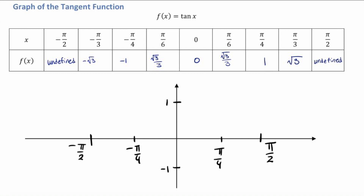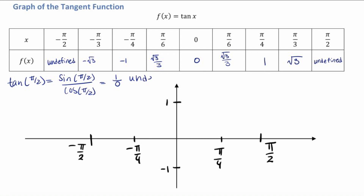Notice that when x equals π/2 and negative π/2, we have an undefined value. Why is that? If you recall, tangent of π/2 equals sine of π/2 over cosine of π/2, which is 1 over 0, so it is undefined. You cannot divide by 0. This tells me that there are vertical asymptotes at every π/2 value. So this is x equals negative π/2 and here we have x equals π/2.